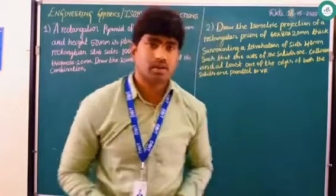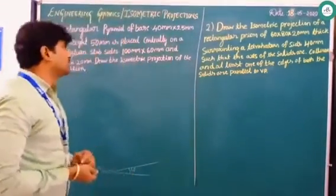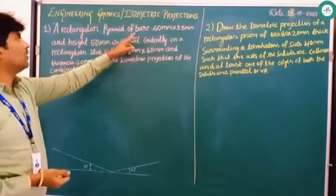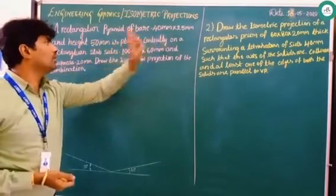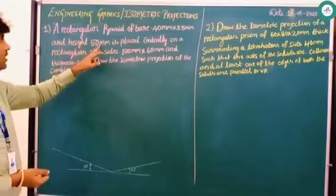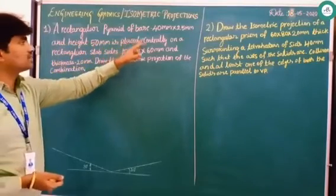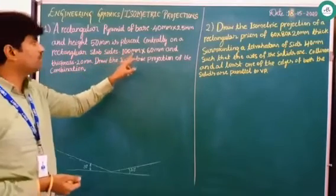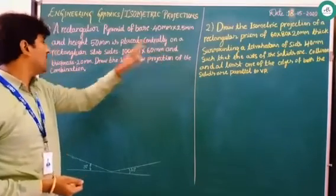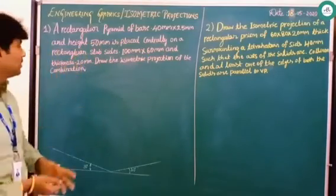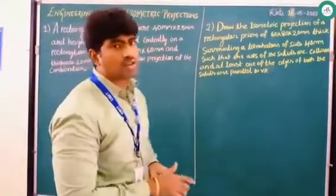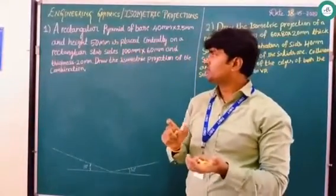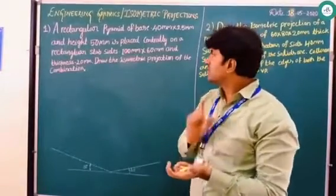Welcome back to the isometric projection class. We shall solve the second problem. A rectangular pyramid of base 40mm × 25mm and height 50mm is placed centrally on a rectangular slab of sides 100mm × 60mm and thickness 20mm. Draw the isometric projection of the combination. In this problem, we have a rectangular pyramid which is placed on a rectangular slab.